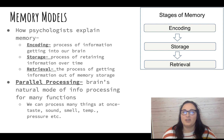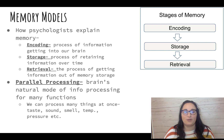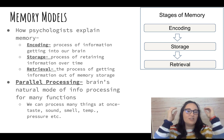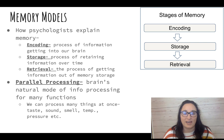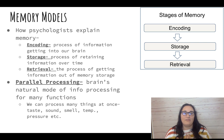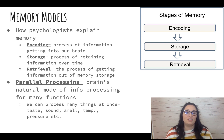The first thing we need to know about how our memory works is the three-stage process of making a memory. The first is encoding — this is how the information gets into our brain. The second is storage, which is about retaining the information over time. Finally, retrieval is the process of getting that information out when we need it.